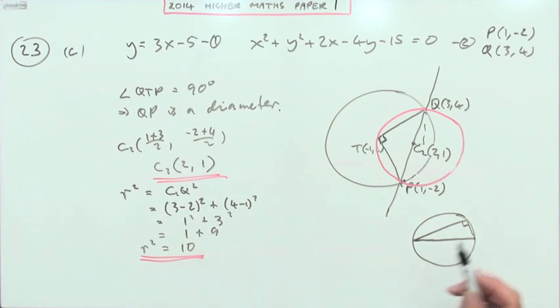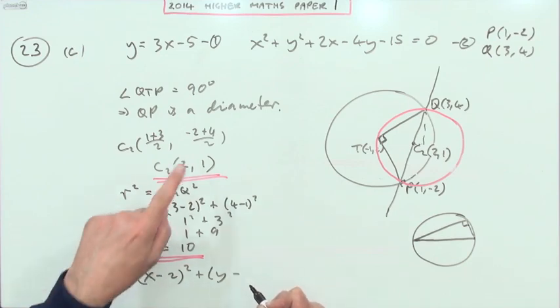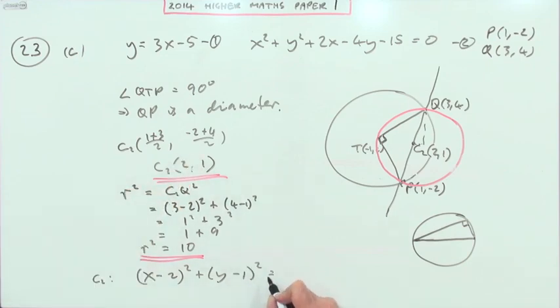Don't really need to know what the radius is because it's r squared you want for the formula. So when it finishes off by saying what's the equation of that circle, the circle C2 is going to be x minus the x coordinate 2, y minus the y coordinate 1, equals the radius squared which is 10. That's question 23.